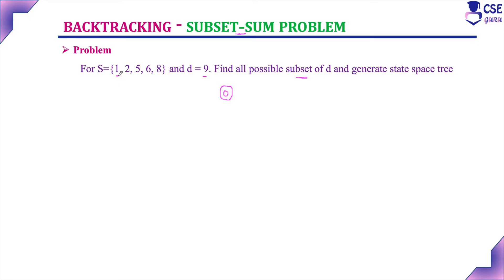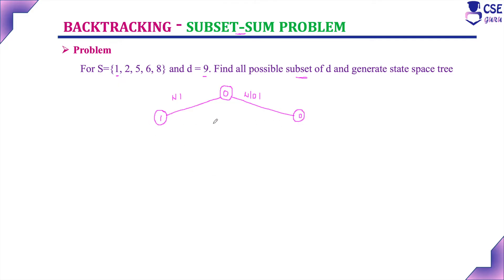The first item in the given set is element 1. If we add element 1 to the initial value, the sum is 0 + 1 = 1. If we do not add element 1, the value remains 0. Adding goes to the left side of the state space tree, and not adding goes to the right side. This is the first level component.